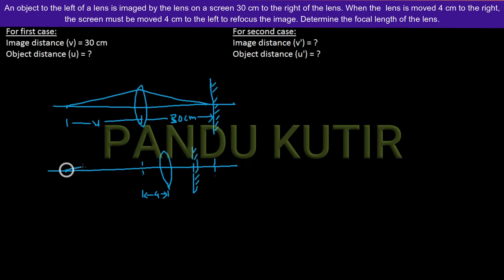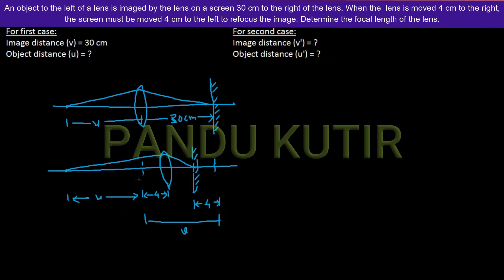It's going to be 4 cm. The question is: which image will move 4 cm to the left-hand side? When you show the distance, you look at u — the object distance. u-prime is equal to u, and this gives us v-prime, which is the new image distance.